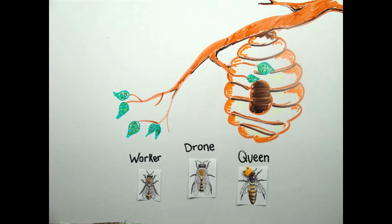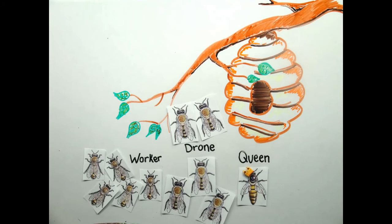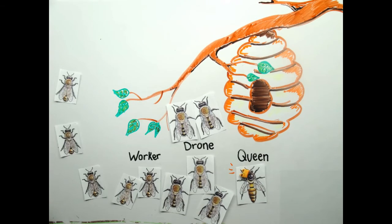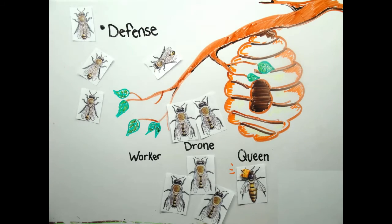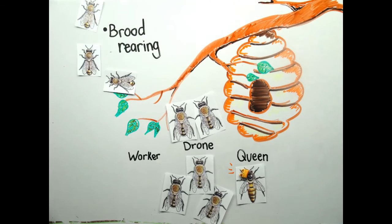The worker bees are smaller in size and lack ovaries for reproduction. They are responsible for hive maintenance, defense, brood rearing, and foraging.